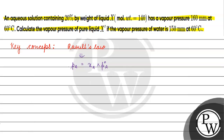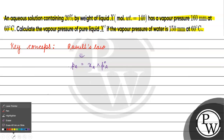If we look at this question, we have an aqueous solution, 20% by weight, of liquid X. Its vapor pressure is 160 mm. We need to find the vapor pressure of pure liquid X, given that the vapor pressure of water is 150 mm at 60 degree Celsius.